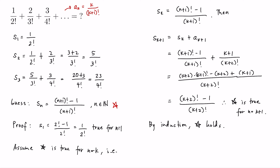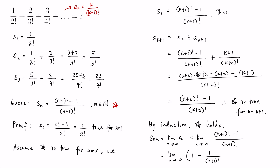Now we can find the sum of our infinite series. The sum is equal to the limit of the nth partial sum S of n as n approaches infinity — that is, the limit as n approaches infinity of (n+1) factorial minus 1, all over (n+1) factorial — which can be written as the limit as n approaches infinity of 1 minus 1 over (n+1) factorial. Clearly this fraction goes to 0 as n approaches infinity, so the limit is equal to 1. That is the sum of this infinite series.